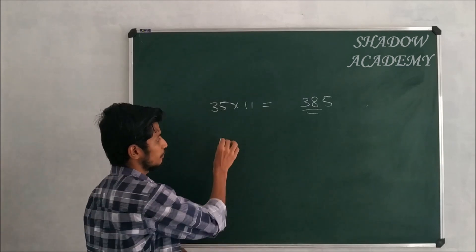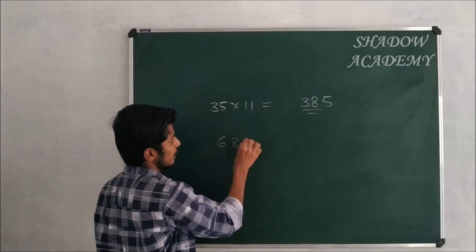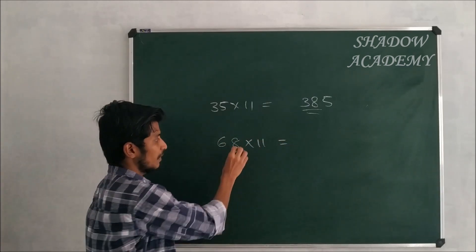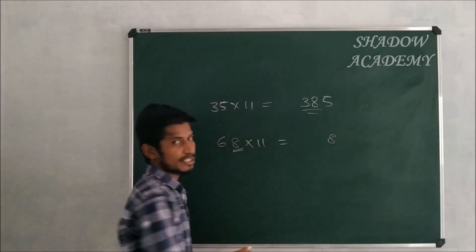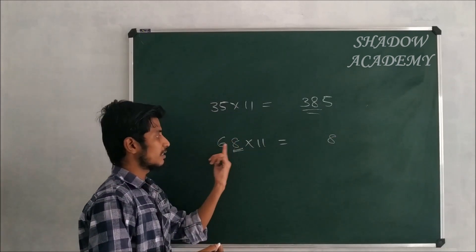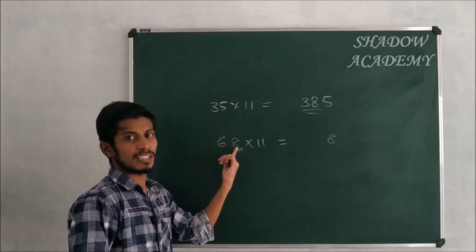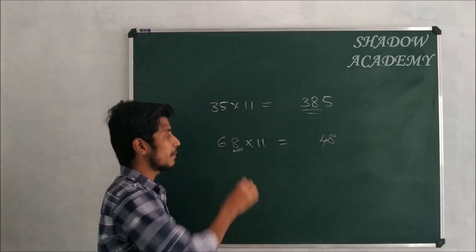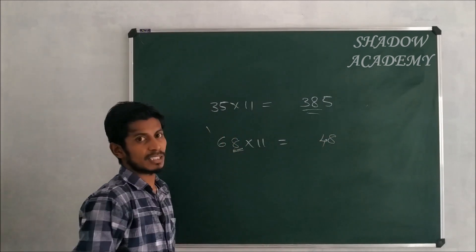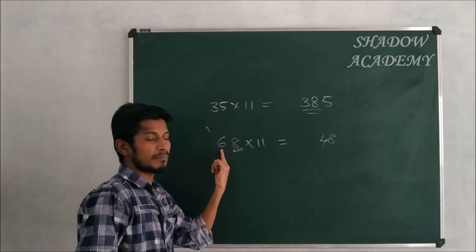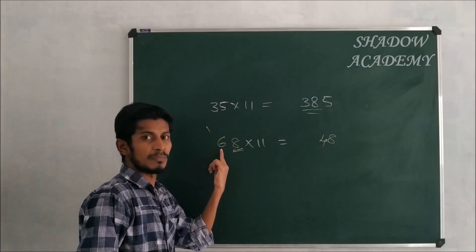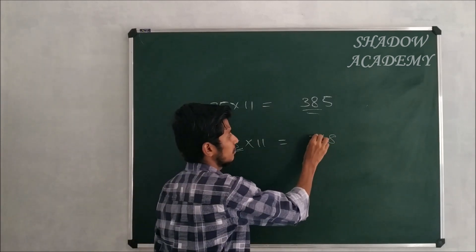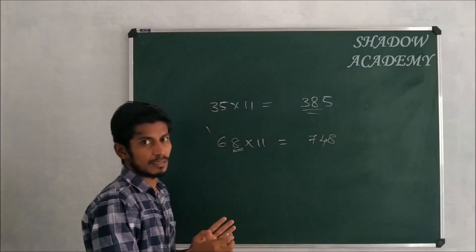For example: 68 × 11. Same procedure: write 8. Then 6 + 8 = 14, write 4 carry 1. Then 6 + carry 1 = 7. So the answer is 748.